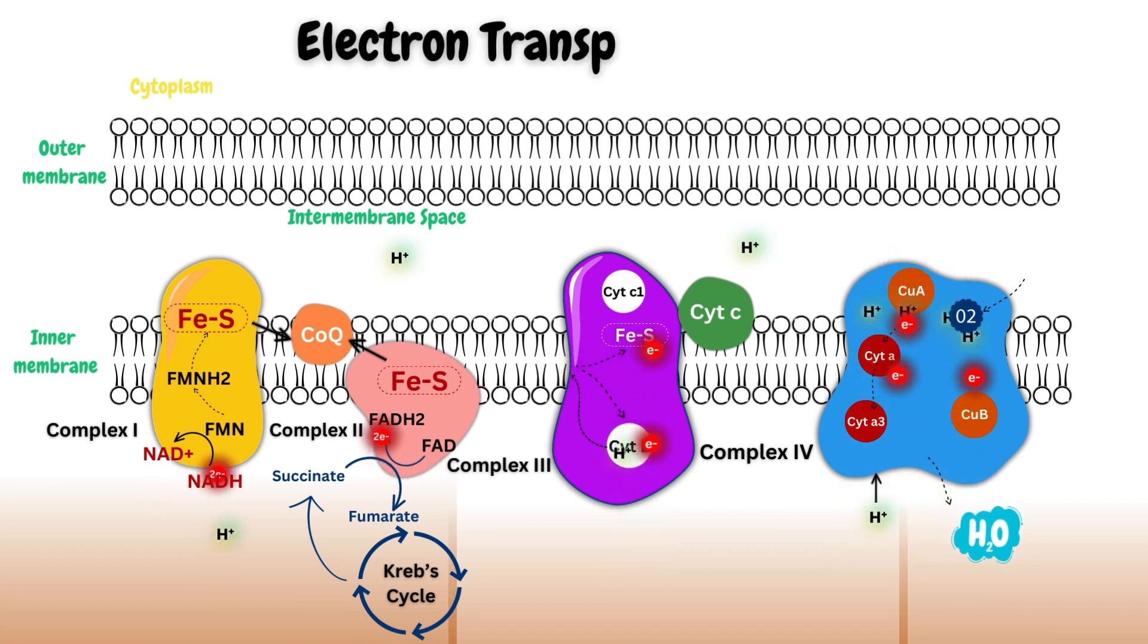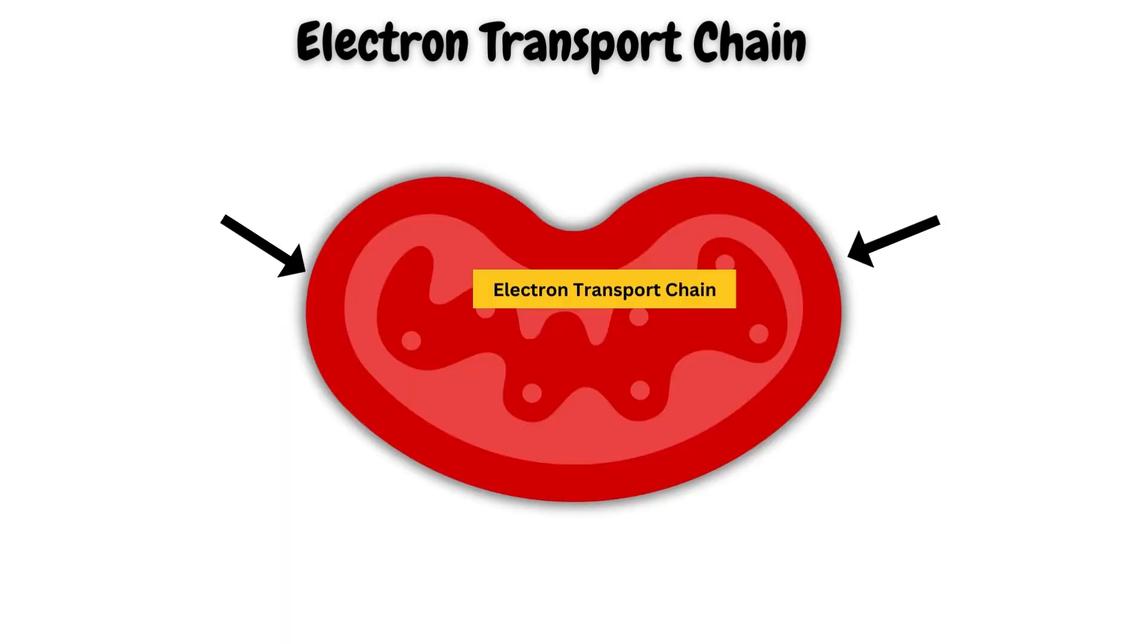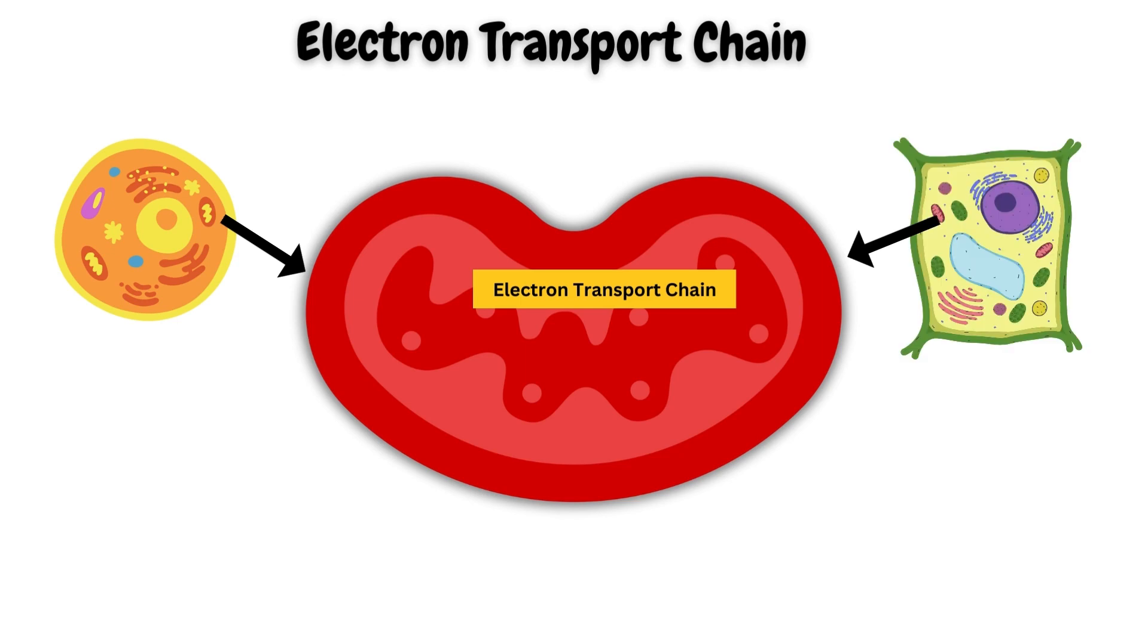Hello, today I will explain the electron transport chain which is a process of cellular respiration. It occurs in the mitochondria of both animal and plant cells and it is important for ATP synthesis during oxidative phosphorylation.